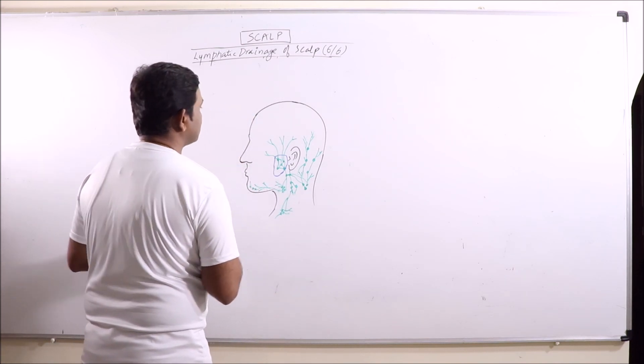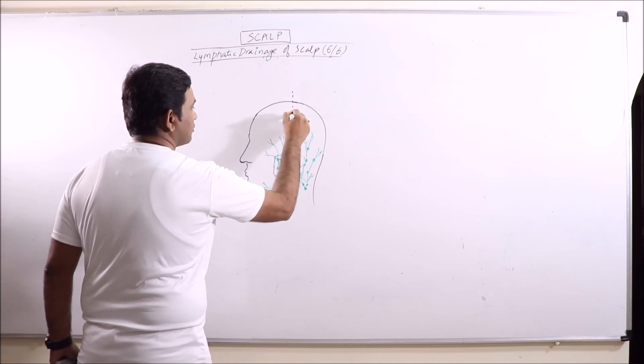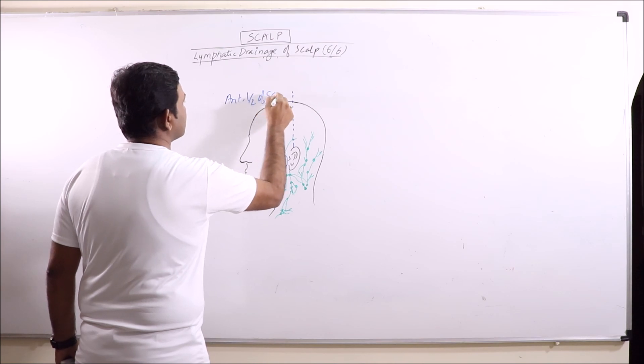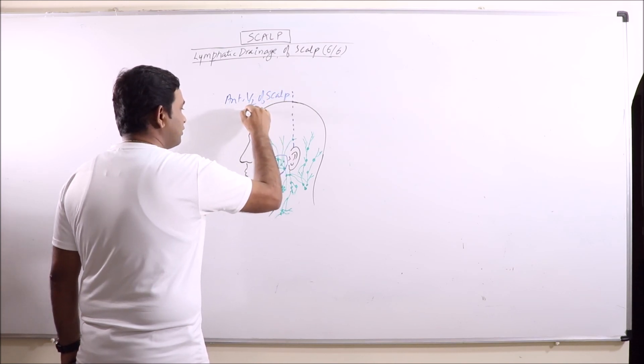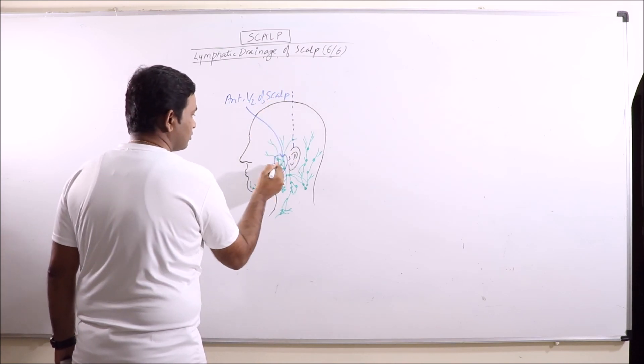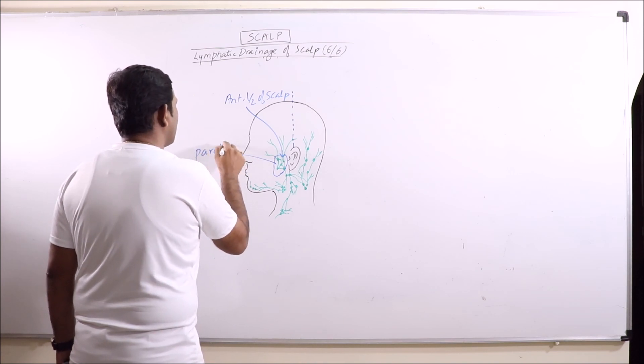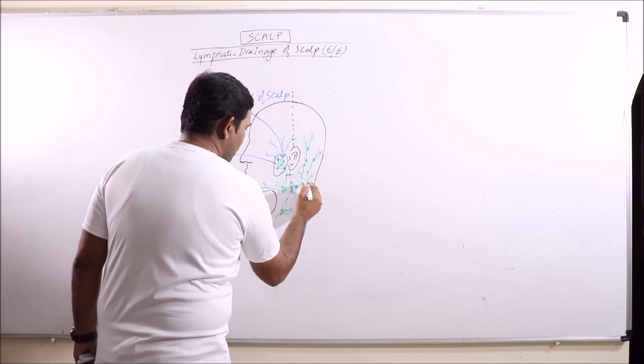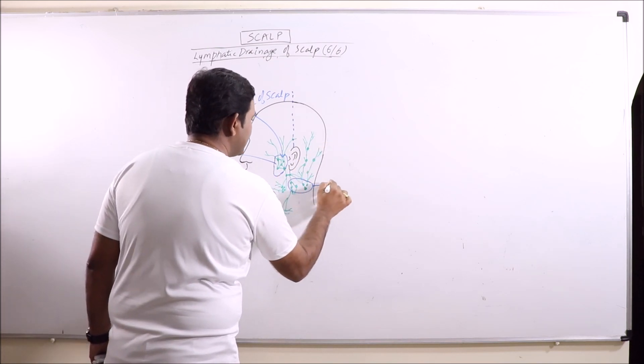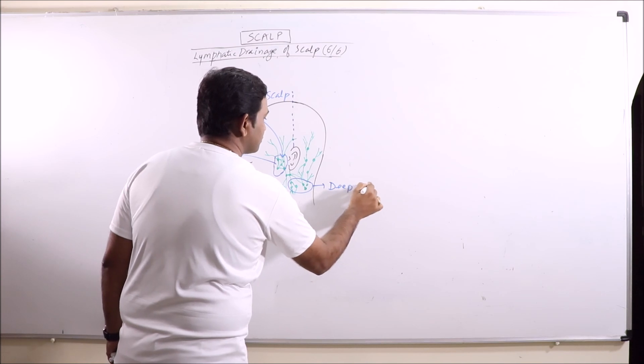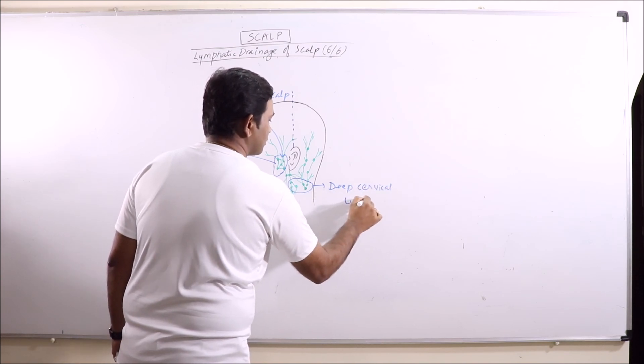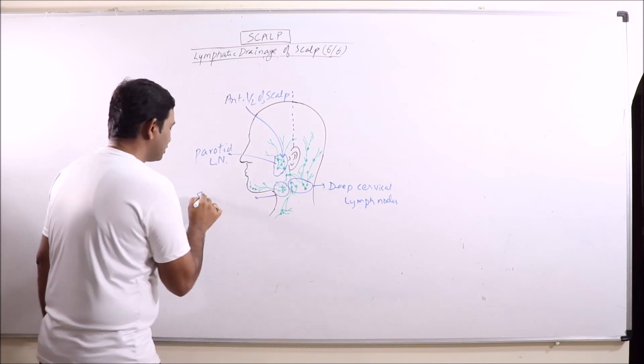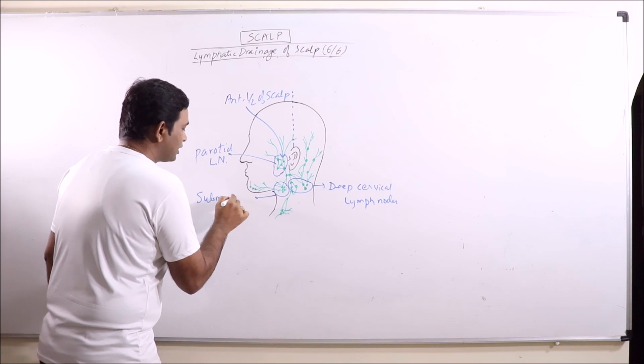The lymphatic vessels from anterior half of the scalp drain into parotid nodes or parotid lymph nodes. These are basically deep cervical lymph nodes, and these are submandibular lymph nodes.